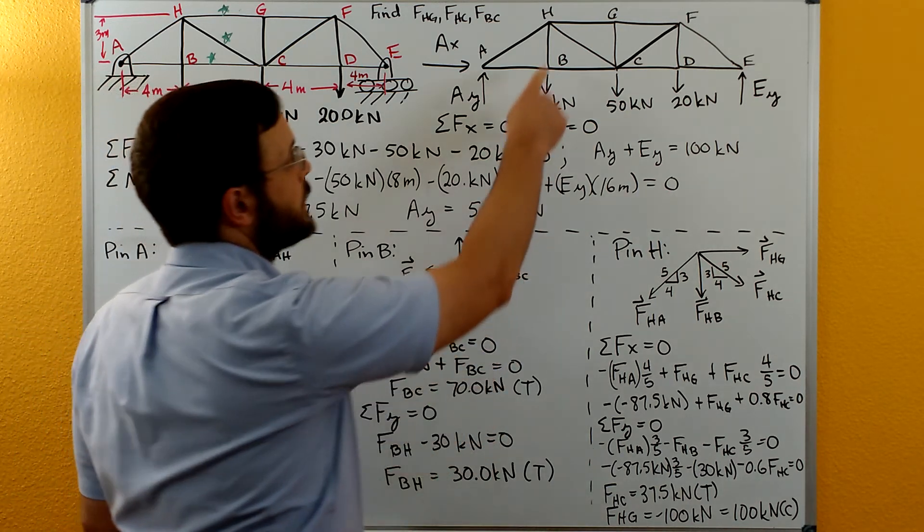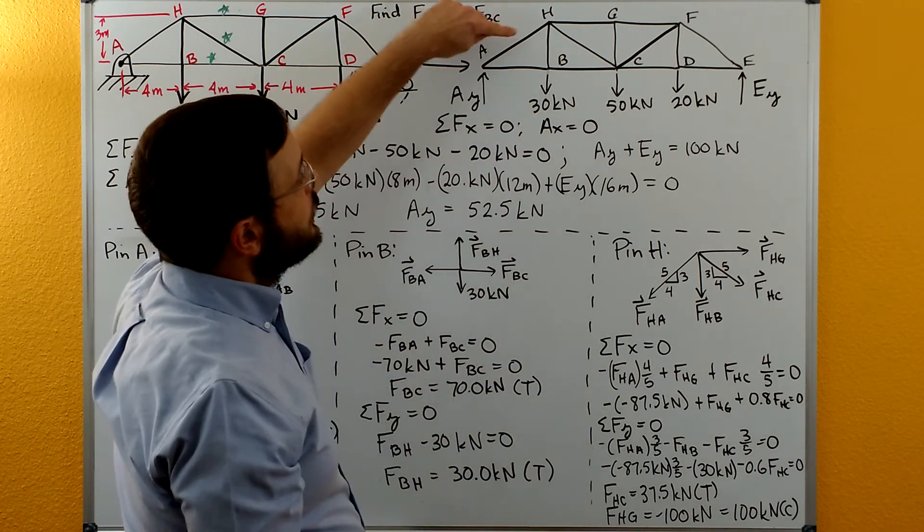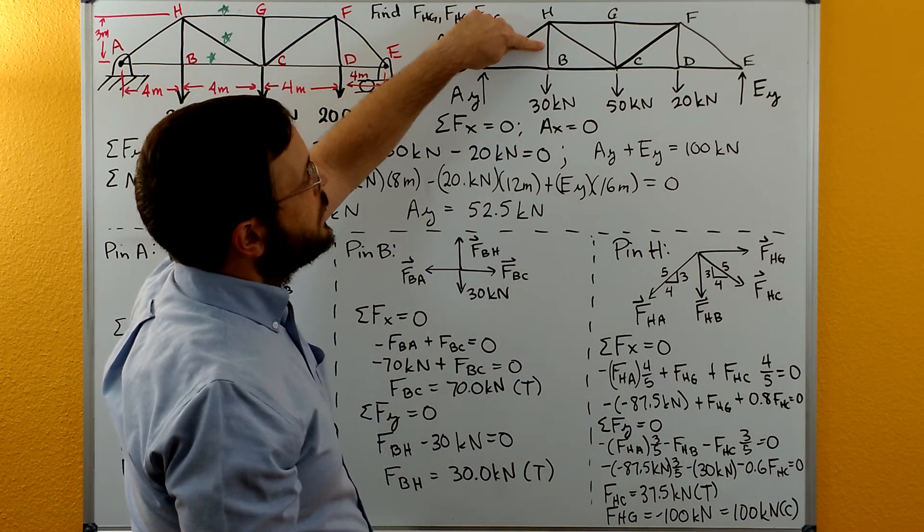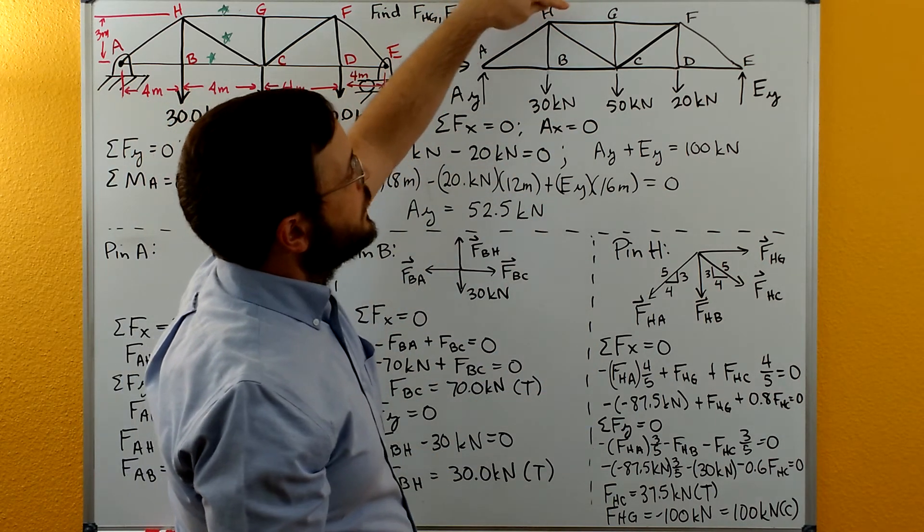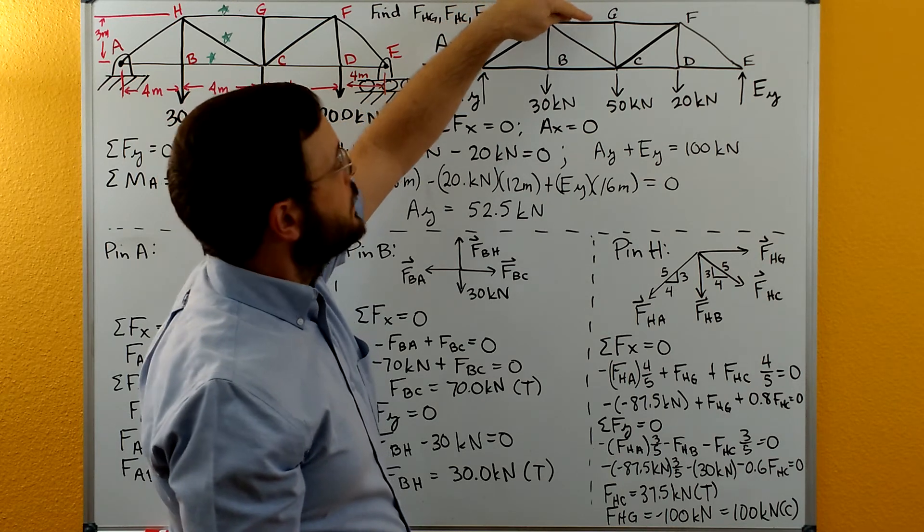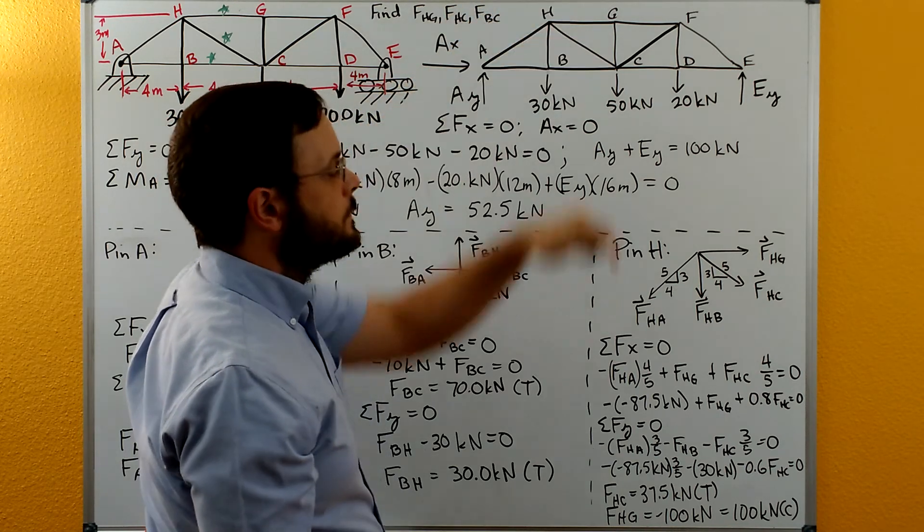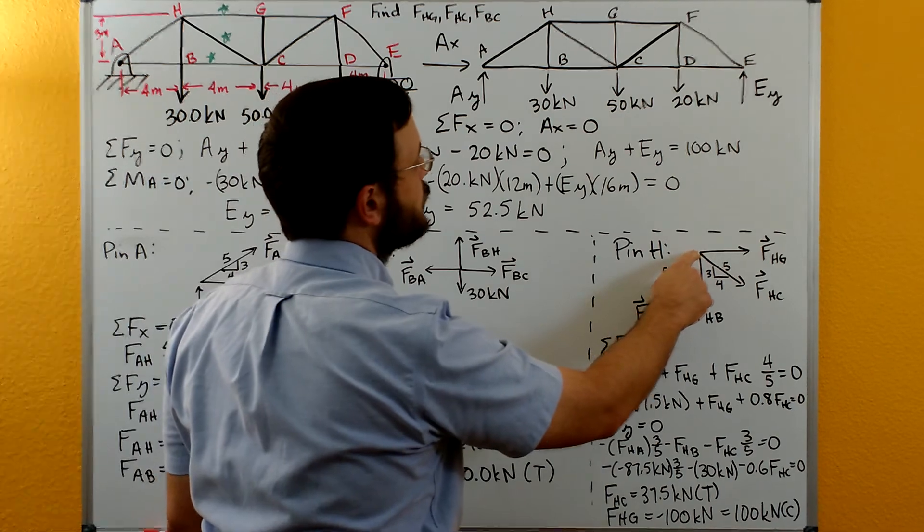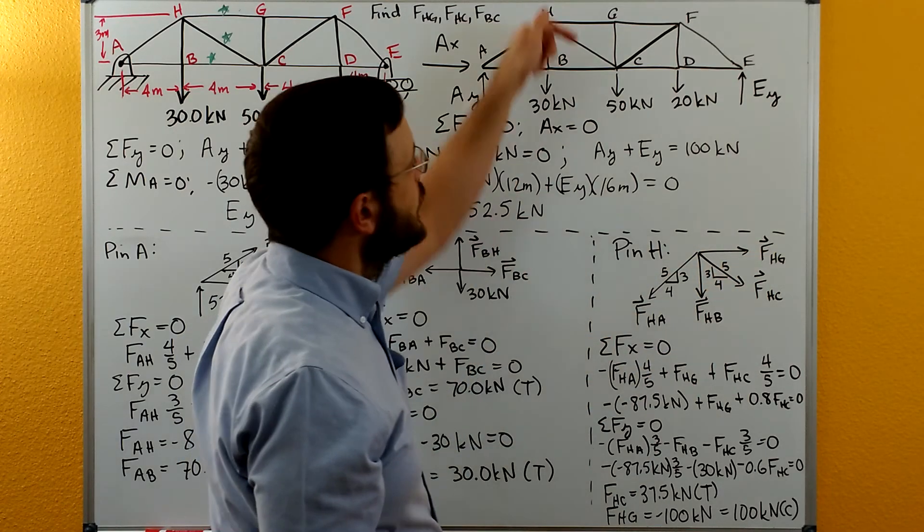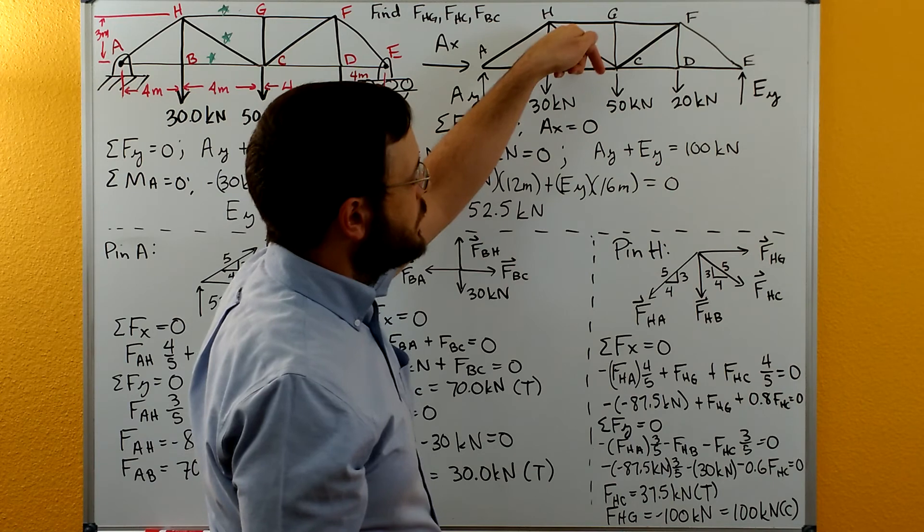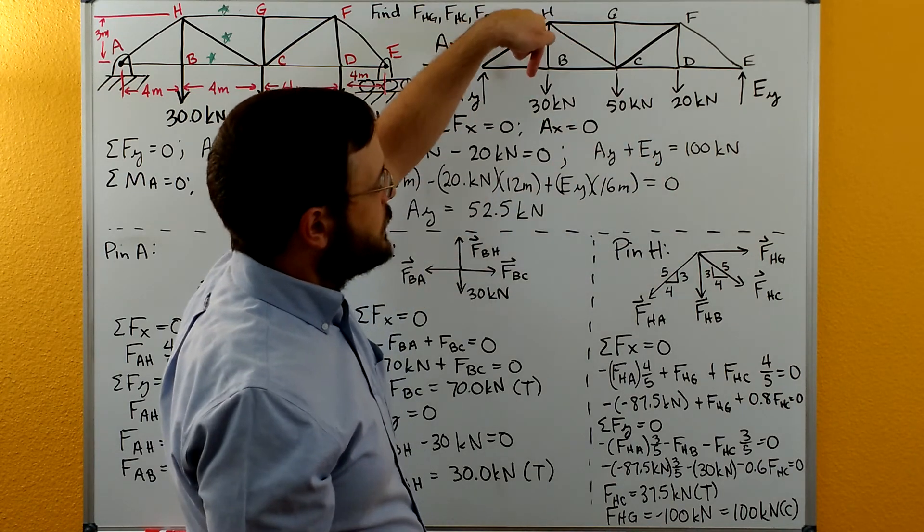Now we can do pin H. We know AH, we know HB. So our unknowns at H are HG and then also HC. Here's our free body diagram. We have FHG, we have FHC, we have FHB, and we have FHA.